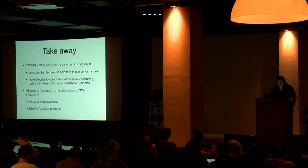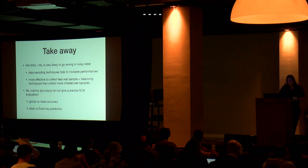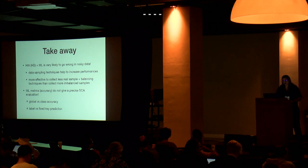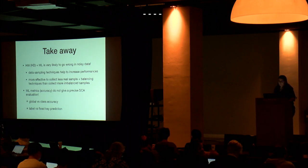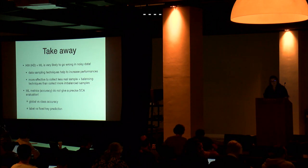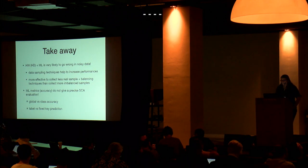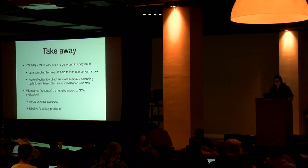The two takeaway messages: first, if you combine Hamming weight or Hamming distance with a machine learning algorithm in a noisy scenario, things are very likely to go wrong. Data sampling techniques like SMOTE really help, and it is more effective to stop earlier and balance than to keep taking more measurements unbalanced. Second, machine learning accuracy and similar metrics do not give a precise SCA evaluation, due to global versus class accuracy issues and label versus fixed-key prediction differences.